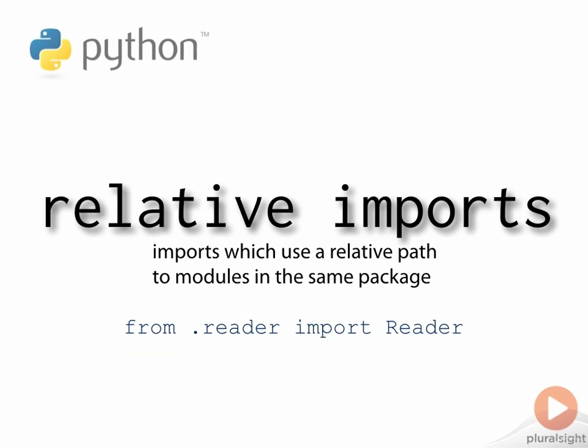Relative imports allow us to use shortened paths to modules and packages. Critically though, this only applies when you're importing something inside the same top-level package.